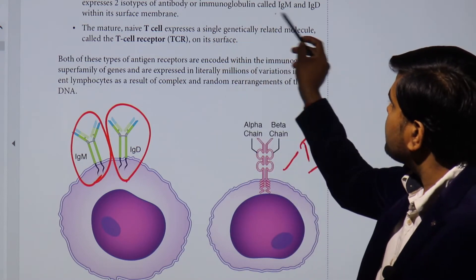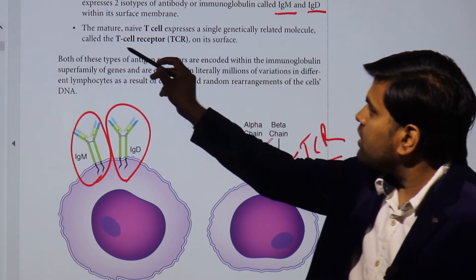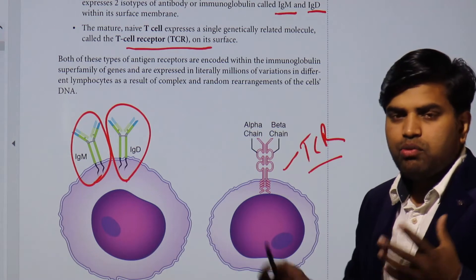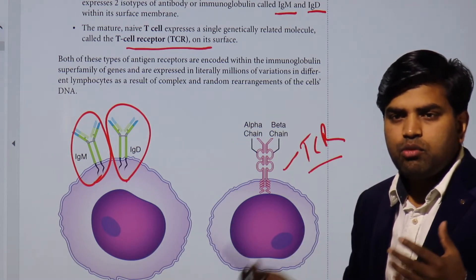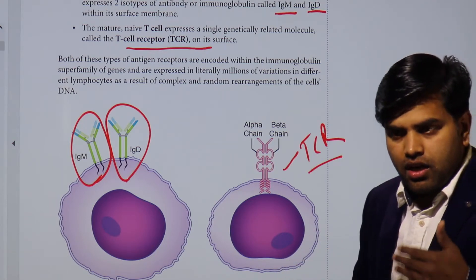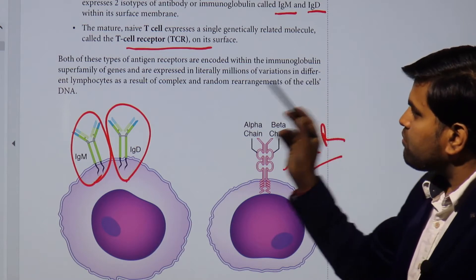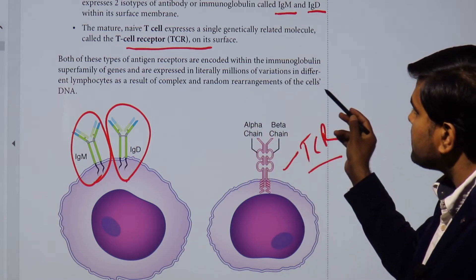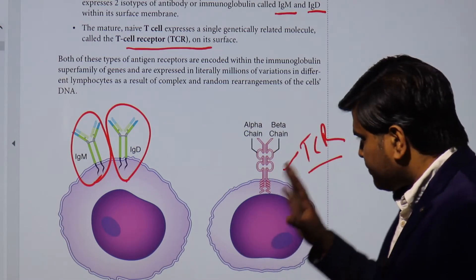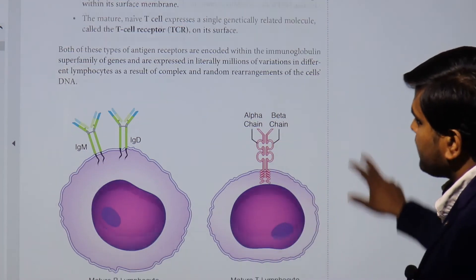Naive B cells express two isotypes — IgM and IgD — on the surface. Mature naive T cells express a single molecule called the T cell receptor. 'Naive' means the cell has not yet encountered any antigen. Both types of antigen receptors are encoded within the immunoglobulin superfamily of genes and expressed in millions of variations across different lymphocytes, due to complex and random rearrangement of cell DNA.